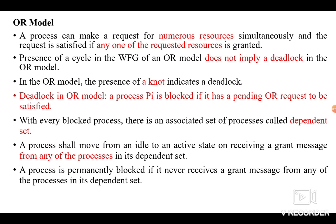The third model is the OR Model. Like the AND Model, a process can request multiple resources simultaneously, but the difference is: in the AND Model we must get all requested resources, whereas in the OR Model, if any one of the requested resources is granted then the request is satisfied. Also, importantly, the presence of a cycle in the wait-for-graph of an OR Model does NOT imply a deadlock — instead, the presence of a knot indicates a deadlock.